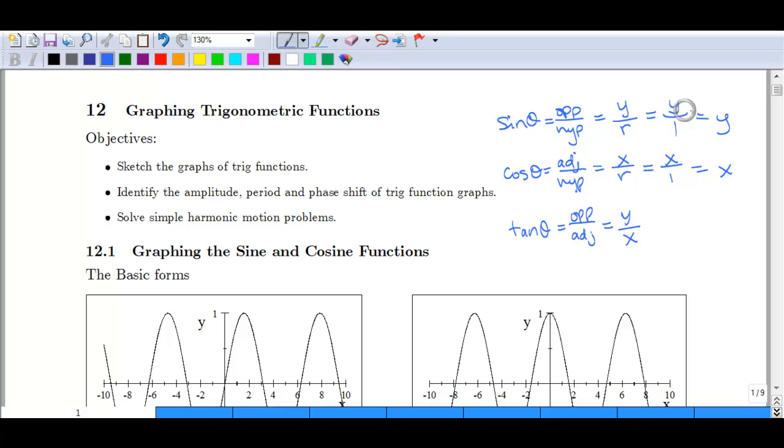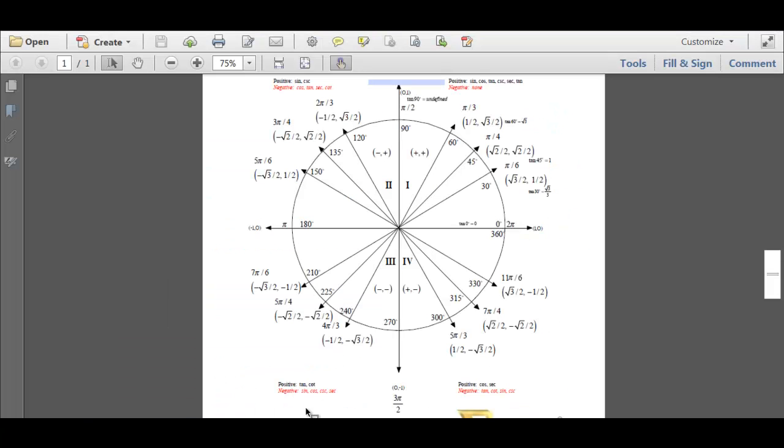So now what we've done is we've put sine and cosine into x and y coordinates. So if you go back to this unit circle, you can see that there are x and y coordinates associated with each angle. And so here's our sine, radical 3 over 2, and here's our cosine, 1 half, written in x, y coordinates. And here's our tangent here as y over x.